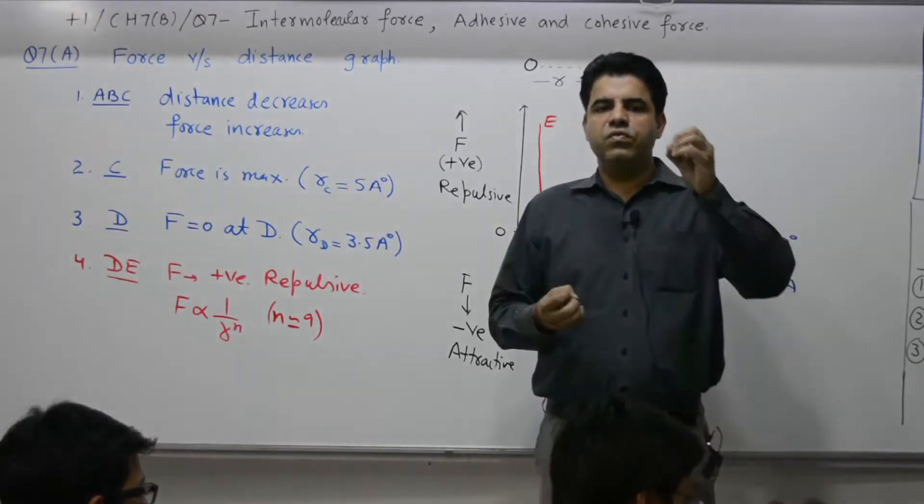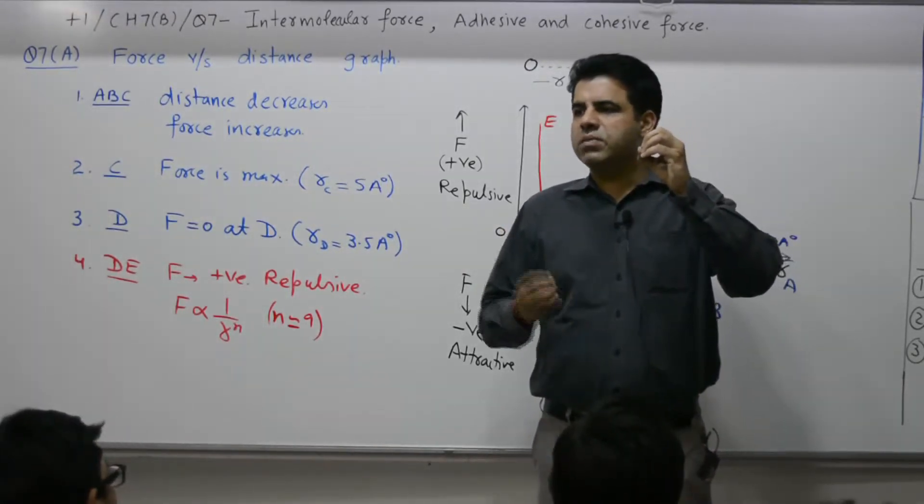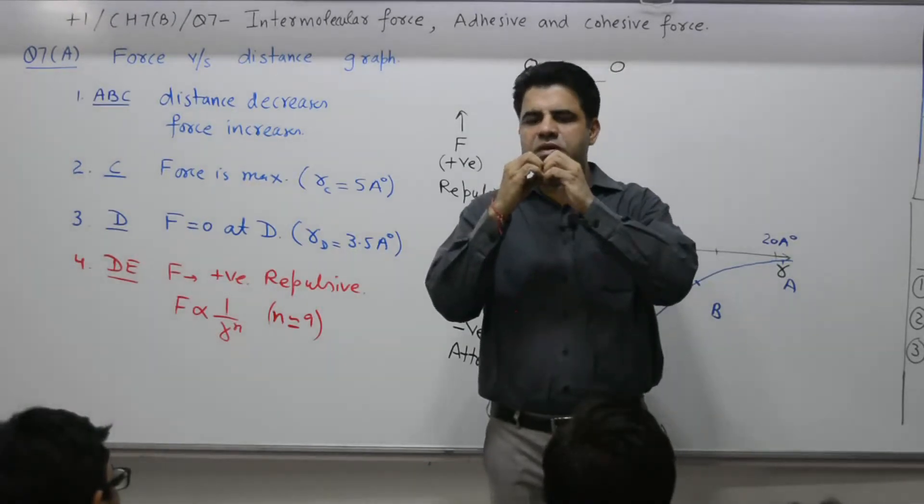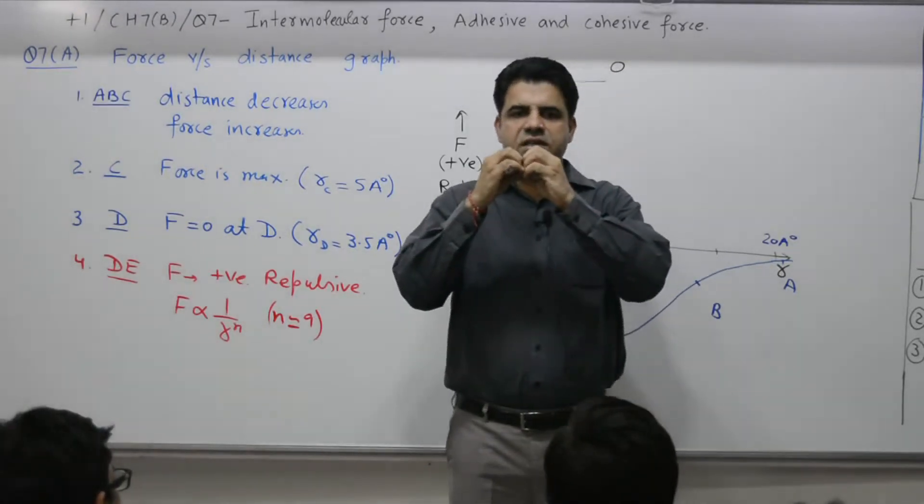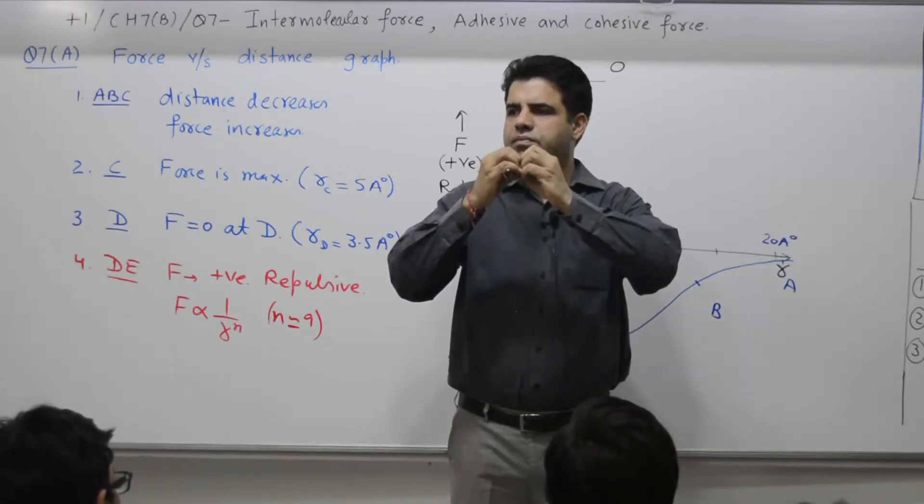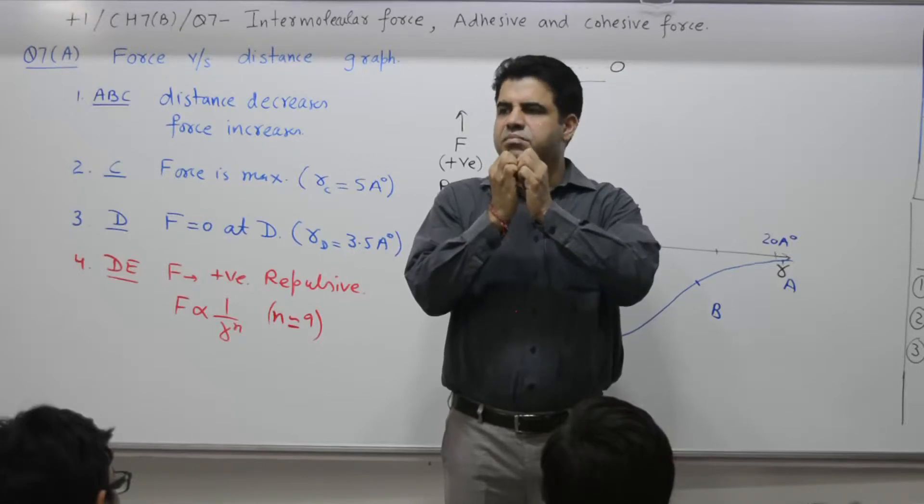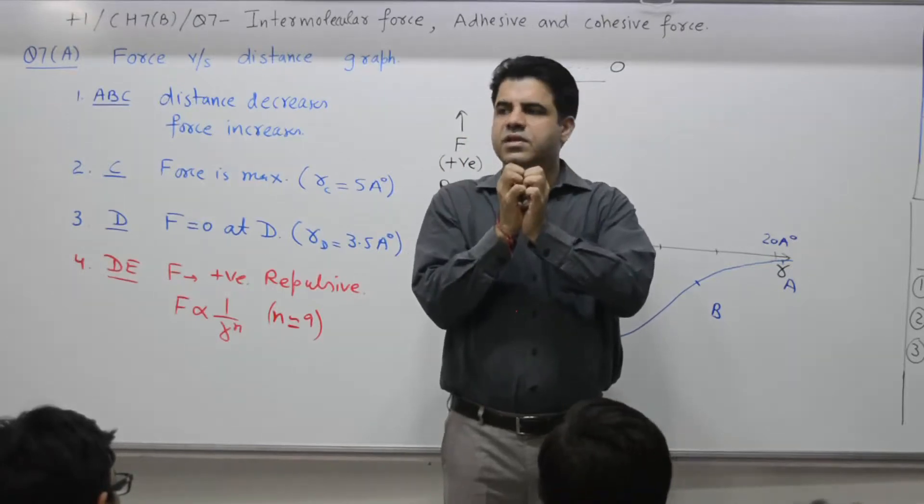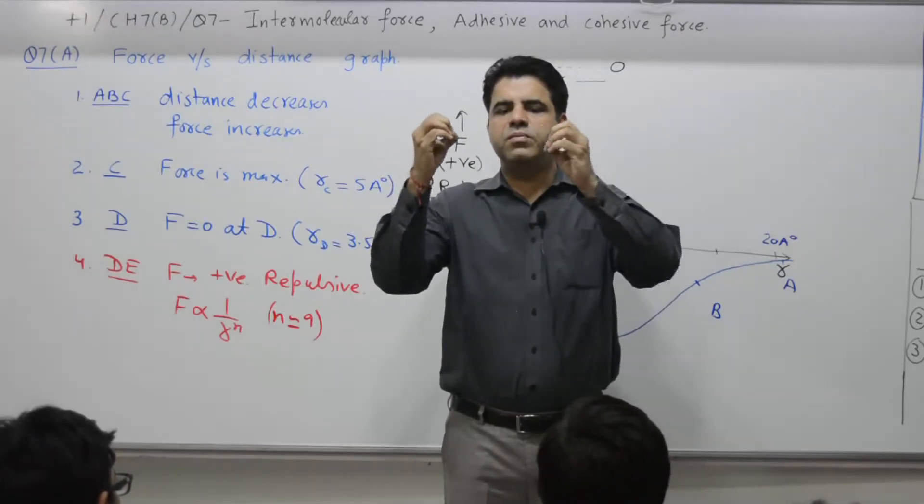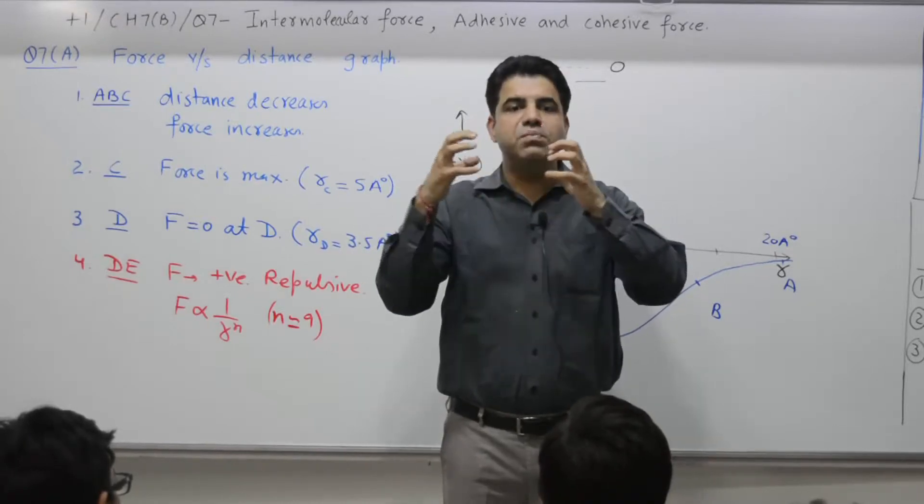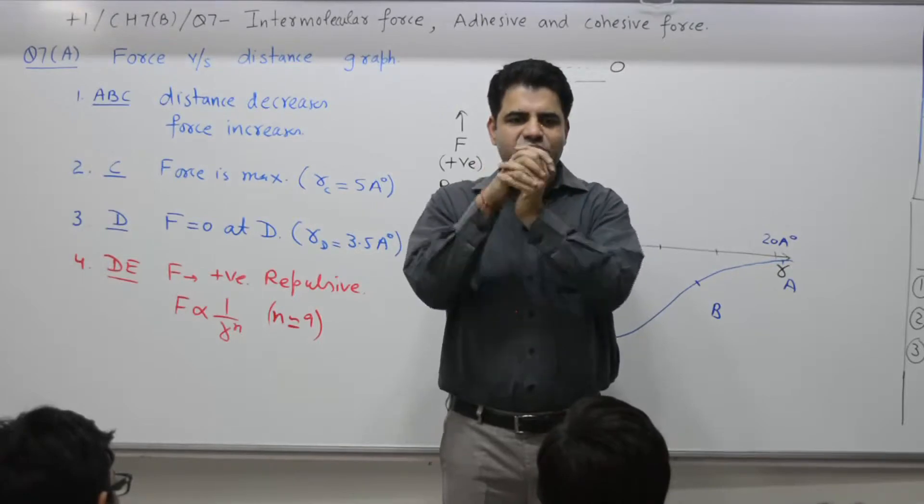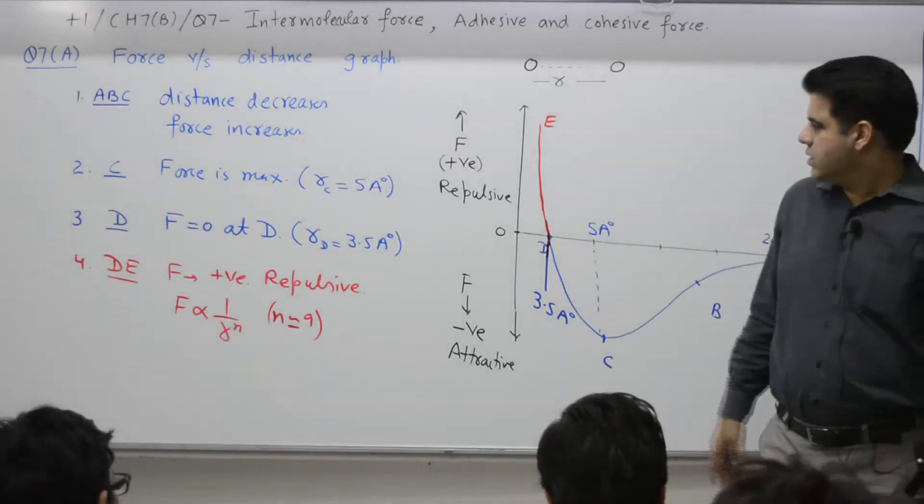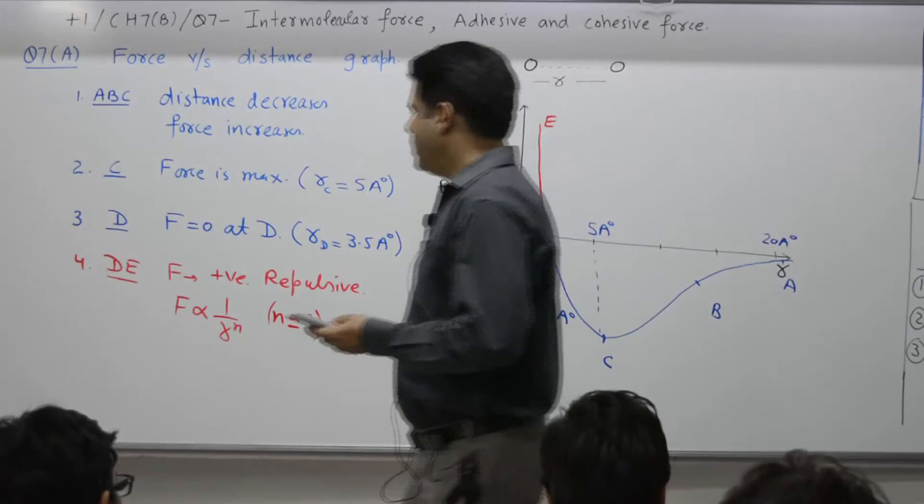It's equivalent to one sphere, radius 2 angstrom, another sphere, radius 2 angstrom. If you bring them together, distance between the two is 4 angstroms. When the two molecules start touching each other, distance between them is 3.5 or 4 angstroms. That means you are further trying to decrease it, meaning you are trying to make these two molecules as one. It's equivalent to cricket ball number one and cricket ball number two. If you press them against each other and try to merge two balls and want to make it one ball, force is repulsive in nature. That is why D to E, this force becomes repulsive.